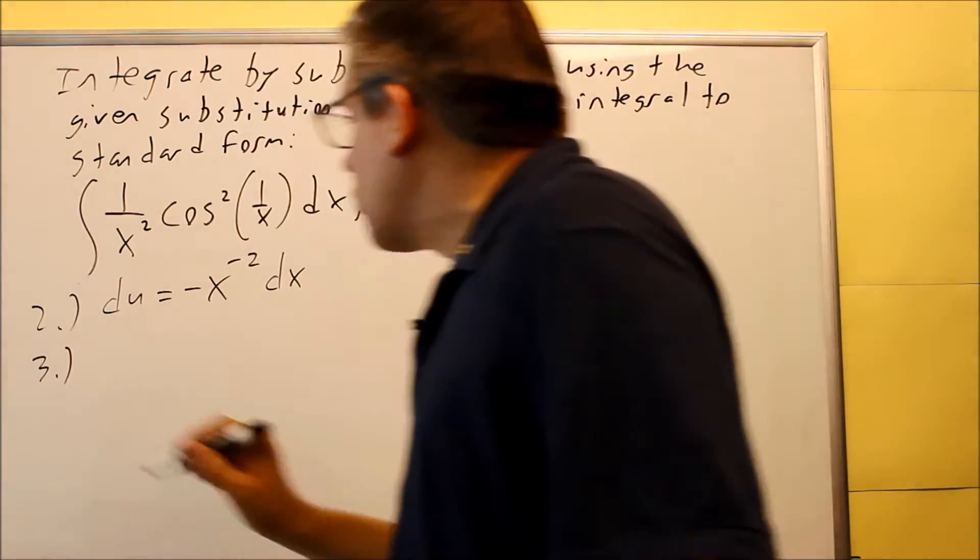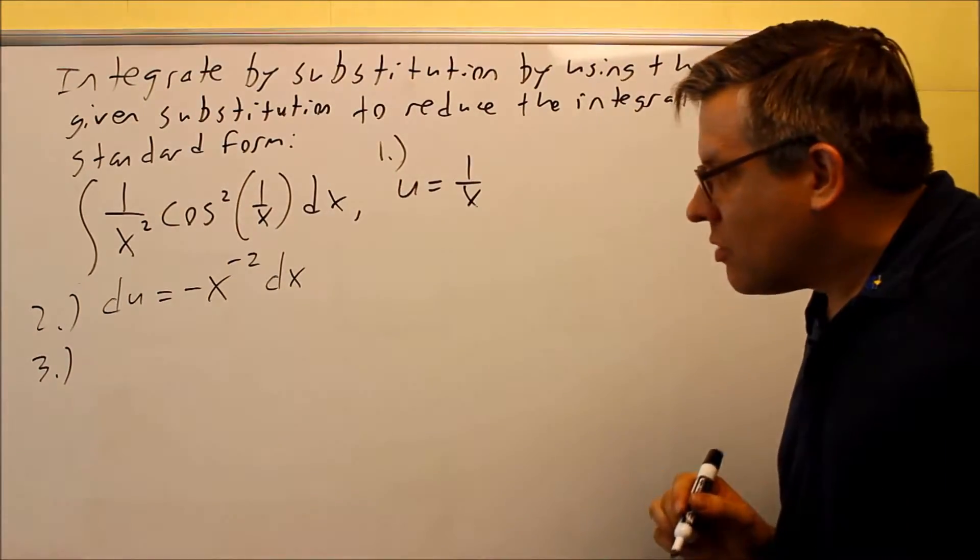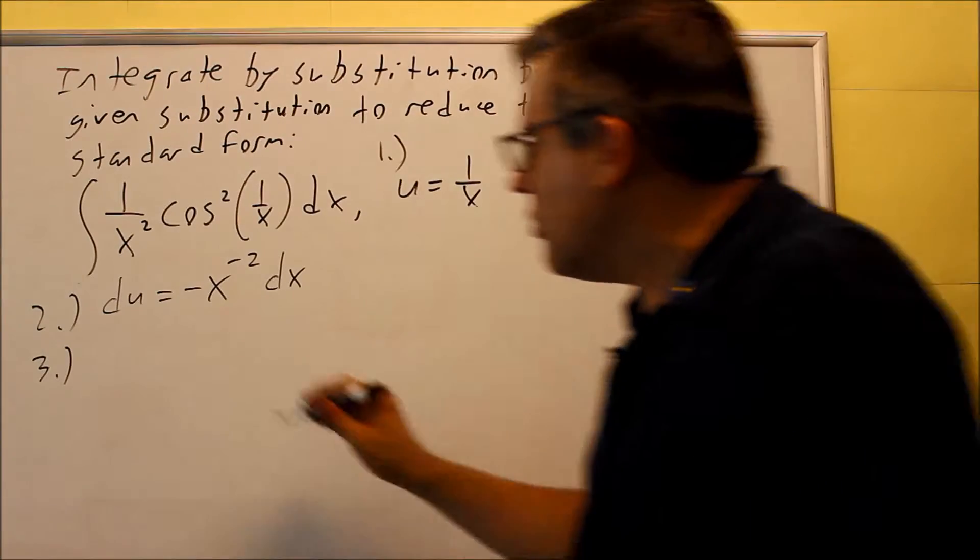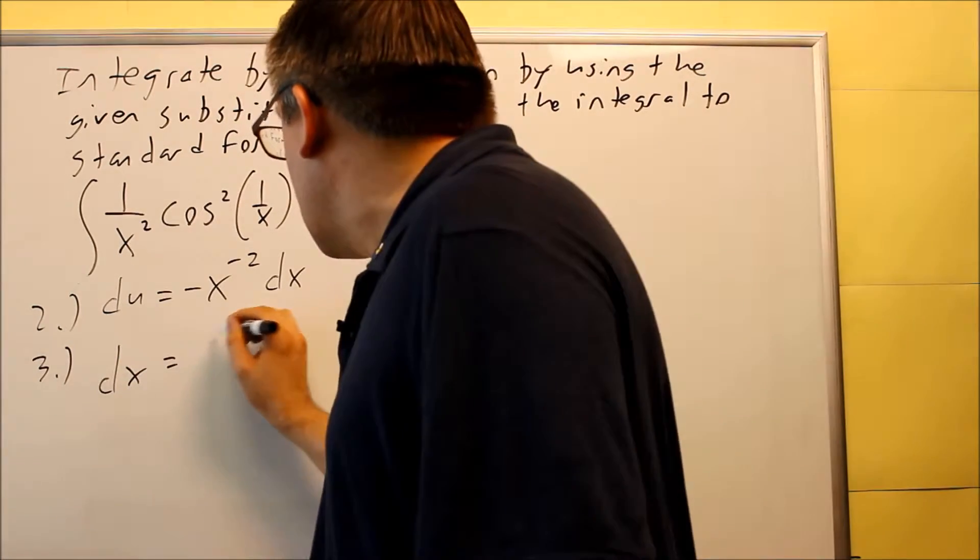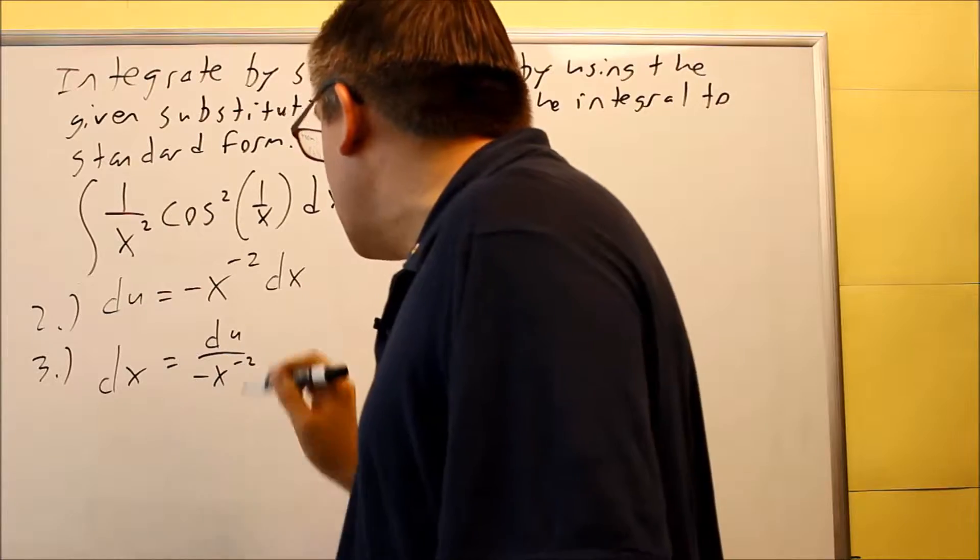And then for step 3 this is where you're going to solve for dx. So we're going to divide both sides by negative x to negative 2, and this will give us du over negative x to negative 2.